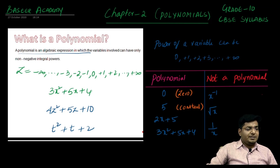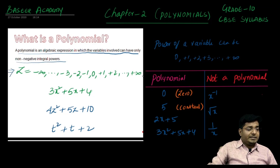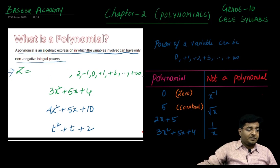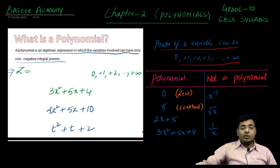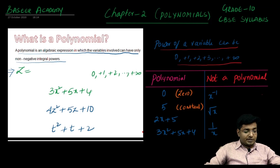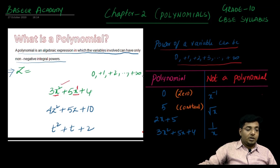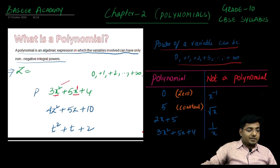What is a polynomial? A polynomial is an algebraic expression in which the variables involved can have only non-negative integral powers. Integers go from minus infinity to plus infinity. If we remove the negative integers, we are left with zero and the positive integers. So the power of a variable can be 0 or the positive integers. For example, 3x squared plus 5x plus 4 is a polynomial because x has powers 2 and 1, which are positive integers. A polynomial is represented by the letter p, so we write p of x.